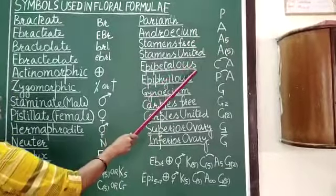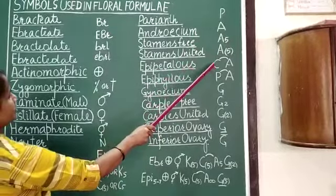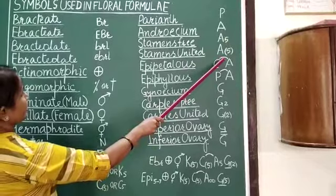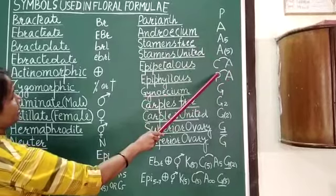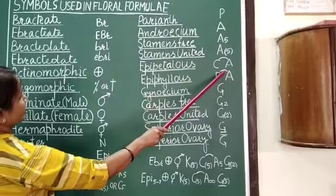Epipetalous condition is represented by C and A connected by this symbol. In epipetalous condition, perianth and androecium are shown as connected by this symbol.